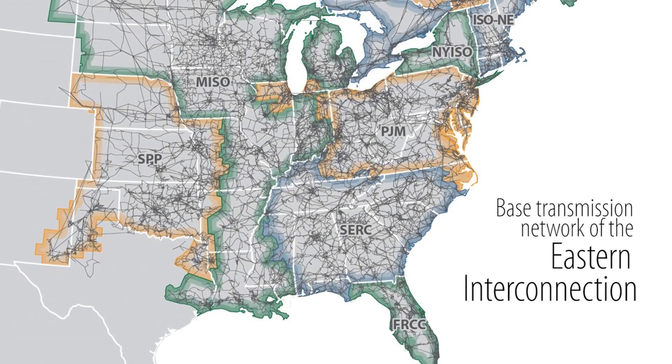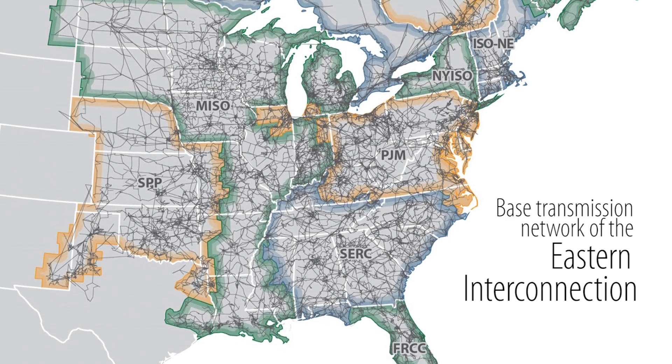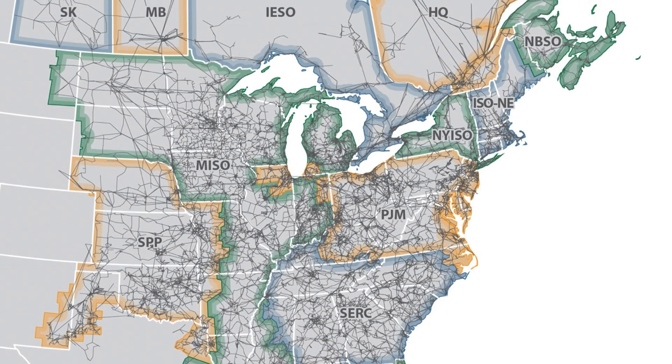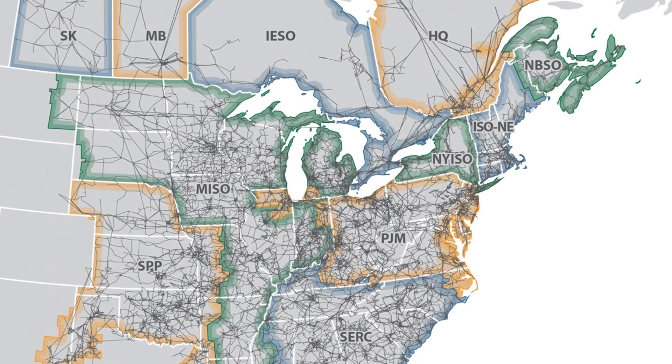The Eastern Interconnection covers two-thirds of the United States and delivers power reliably all the way from New Mexico to Maine. It's a really big system and one of the most complex in the world.